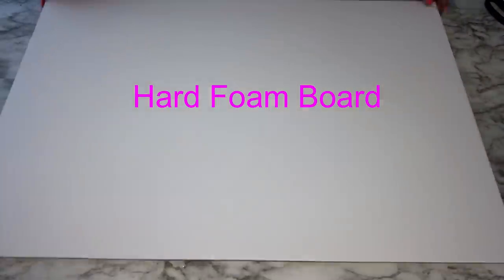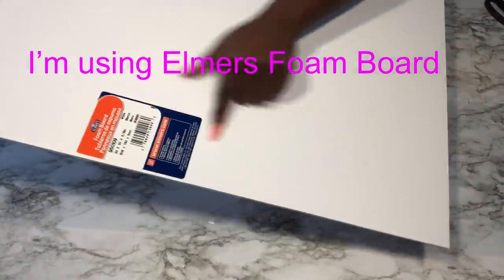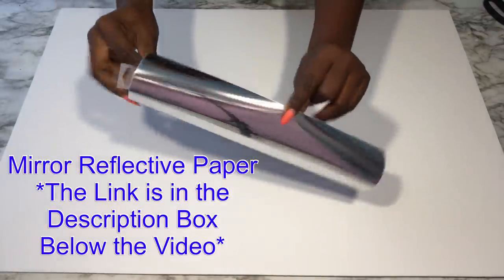Hey guys, Europe Essentials here. Today's video is gonna be how to make a wall decor with a matching console table. I'm starting off with a foam board, and it has to be a hard foam board for this particular project. I'm also gonna be covering the foam board with mirror reflective paper, and I have a link for this down in the description box below.